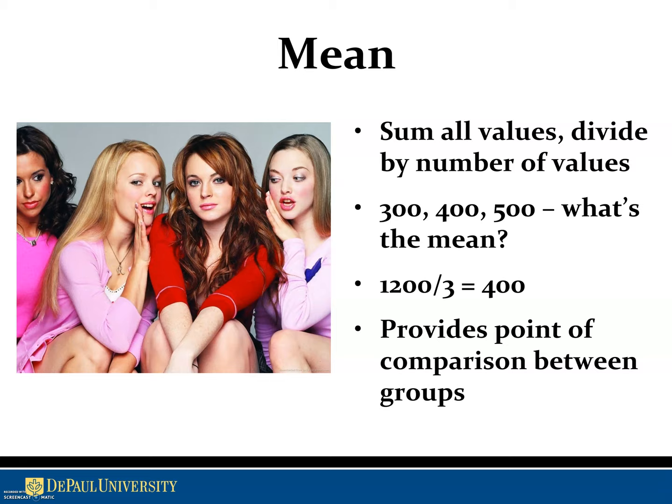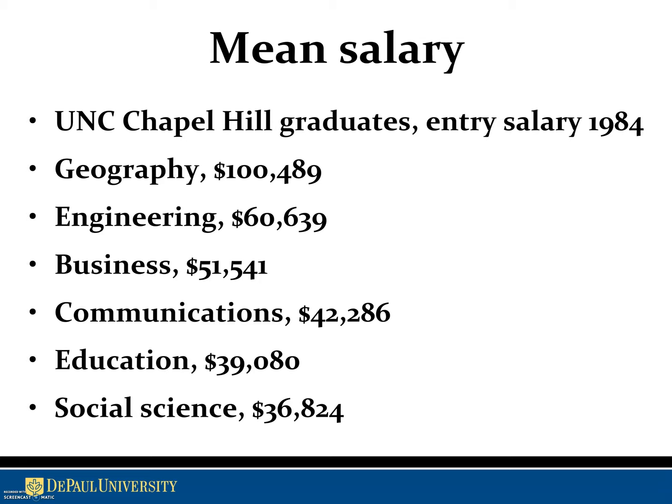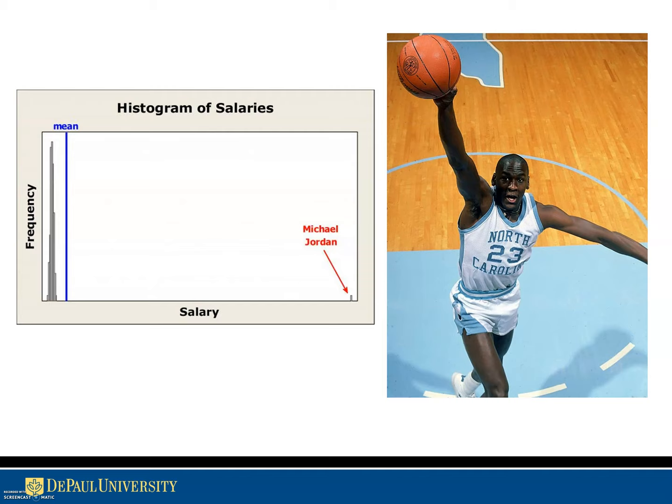One of the most famous examples occurs when UNC Chapel Hill looked at their graduates' entry-level salaries. In 1984, Carolina geography was even in the six figures, surpassing engineering, business, communications, education, and science. The simple explanation: it includes the salary of Michael Jordan, drafted by the Chicago Bulls with a very lucrative salary, who happened to be a graduate of their geography program. In the histogram, most geography graduate salaries were clustered far below, and that one exception pulled the mean far to the right, distorting it. That's when you want to be sensitive to the distribution and use the median instead.